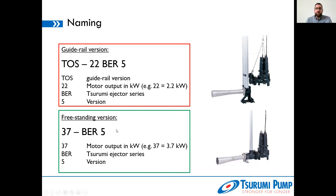If we're talking about the freestanding version, we are missing the TOS designation because it's freestanding. The other information is completely identical. The 3.7 in this case also gives you information about the motor output in kilowatt — so 3.7 kilowatt. BER is the same ejector series, and the version in that case is also 5.